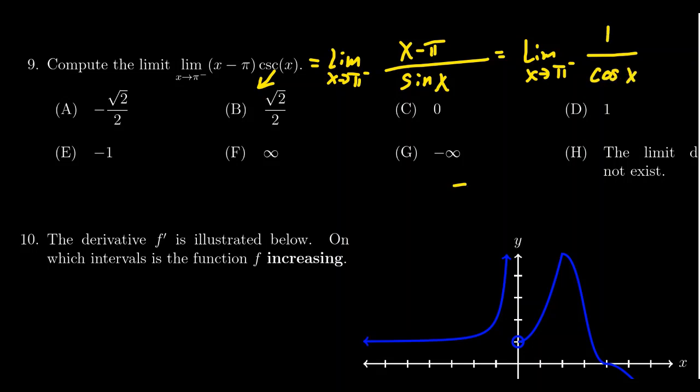If we plug in pi, we get one over cosine of pi. Cosine of pi is negative one, so we get one over negative one, which equals negative one. The correct answer is E.